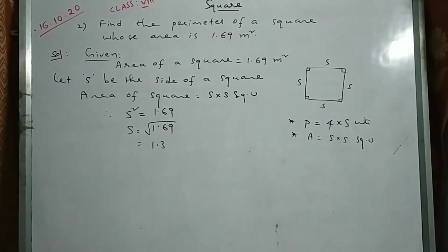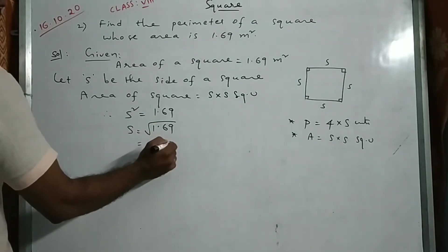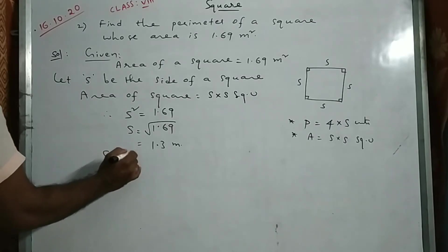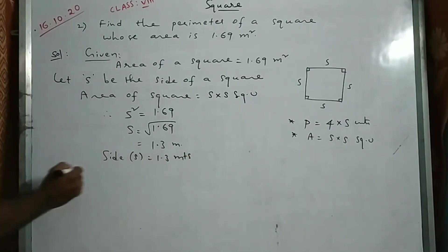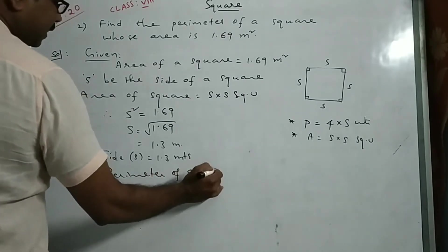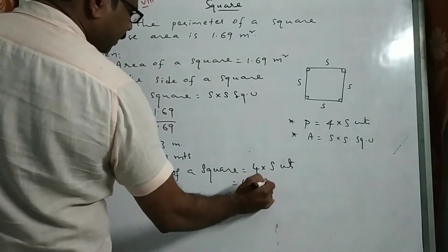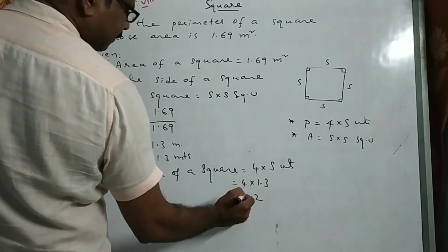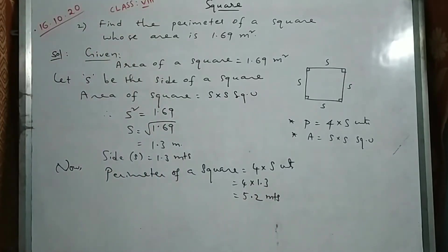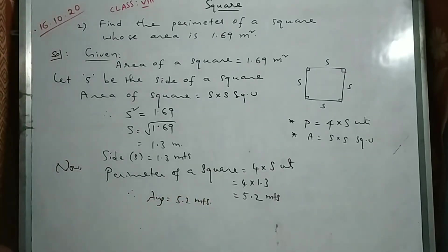So side S equals 1.3 meters. Now we can find the perimeter easily. Perimeter of a square equals 4 into side, which is 4 into 1.3, giving us 5.2 meters. Therefore the answer is 5.2 meters. When area is given, we found perimeter. When perimeter is given, we found area — two models.